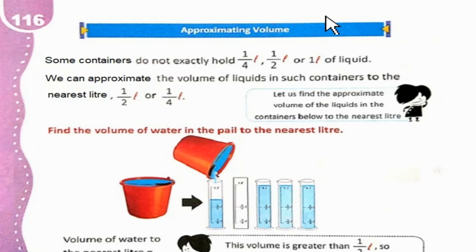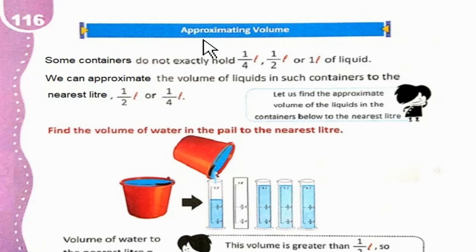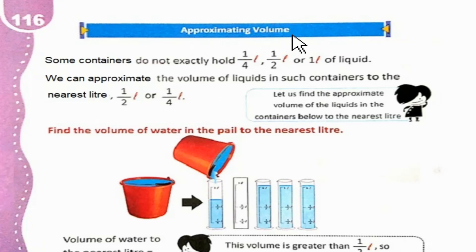The Smart School Grade 2, Mathematics, Unit 9, Volume, Page 116 — Approximating Volume. Approximating volume یعنی Volume کا اندازہ لگانا — بتانا کہ تقریباً Volume کتنا ہے.